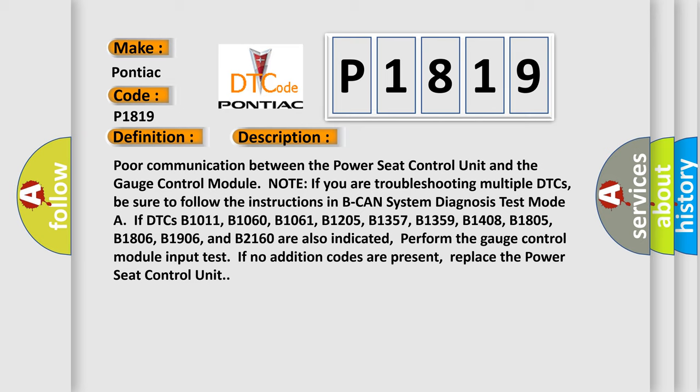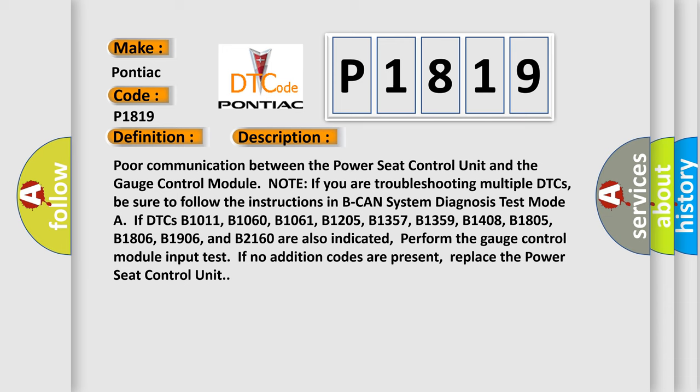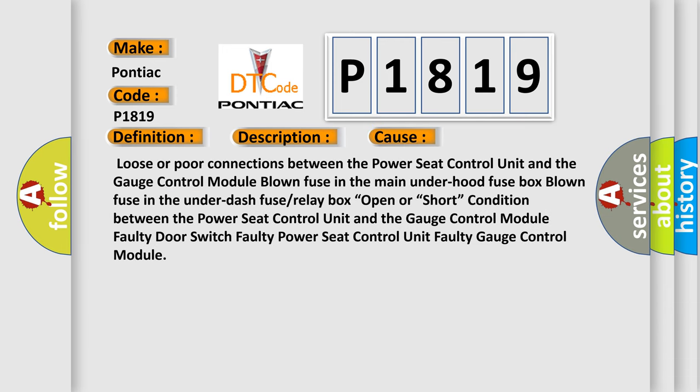Replace the power seat control unit. This diagnostic error occurs most often in these cases: loose or poor connections between the power seat control unit and the gauge control module; blown fuse in the main under-hood fuse box; blown fuse in the under-dash fuse or relay box; open or short condition between the power seat control unit and the gauge control module; faulty door switch; faulty power seat control unit; faulty gauge control module.